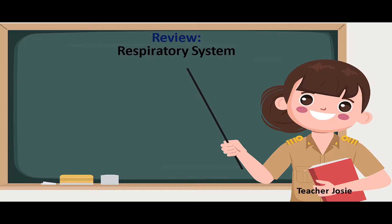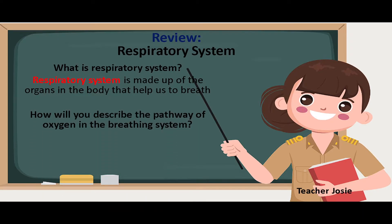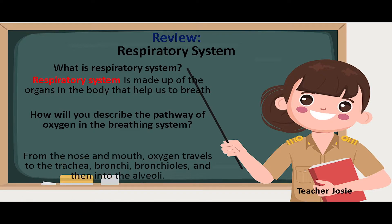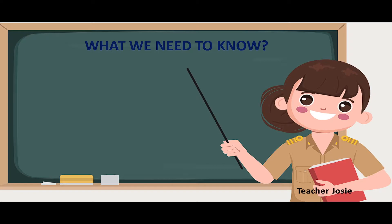Let us first review what we have discussed in our previous video about the respiratory system. The respiratory system is made up of the organs in the body that help us to breathe. The pathway of oxygen in the breathing system goes from the nose and mouth, then to the trachea, bronchi, bronchioles, and then into the alveoli.